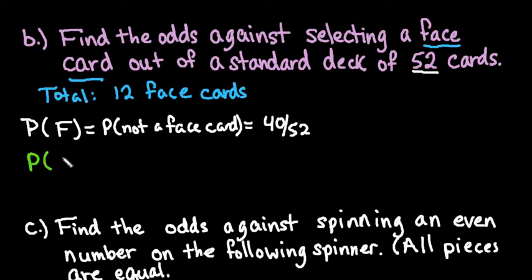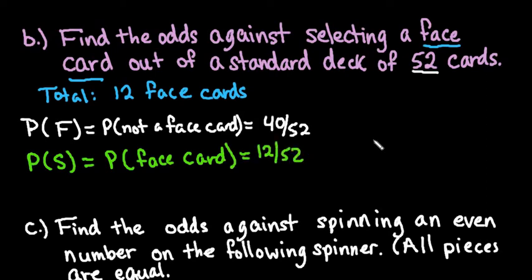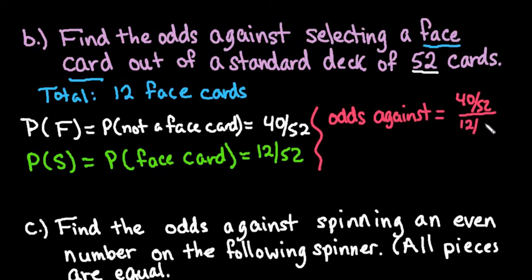We also need the probability of success, which is the probability we did select a face card: 12 out of 52. When calculating the odds against, you have to read the question carefully because sometimes it will say odds for. In this case, we're looking for odds against. So we do 40/52 over 12/52, and the denominators cancel each other out.